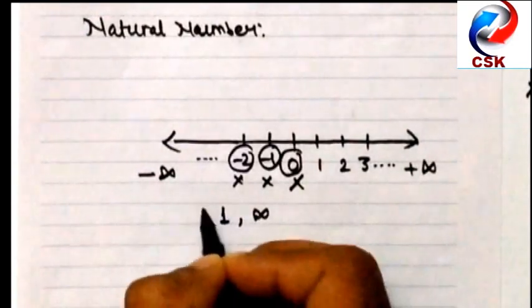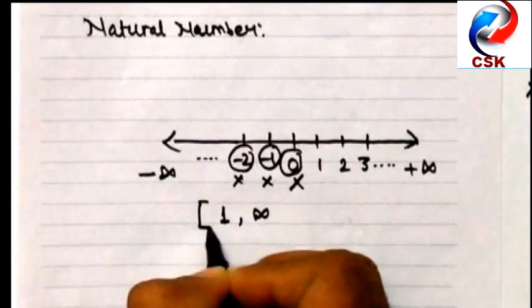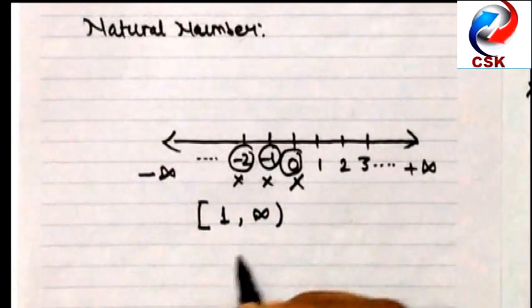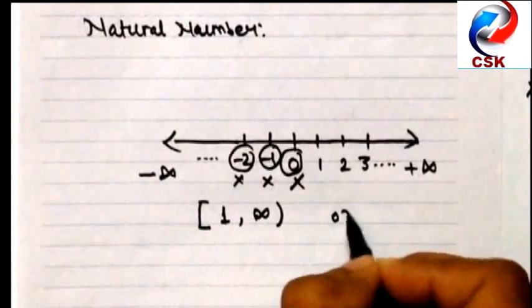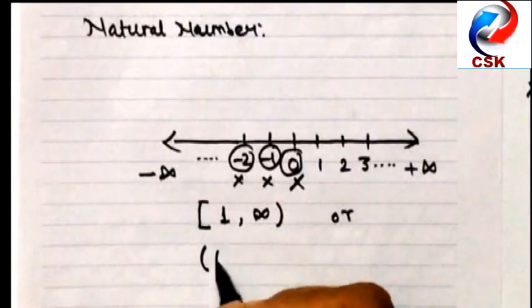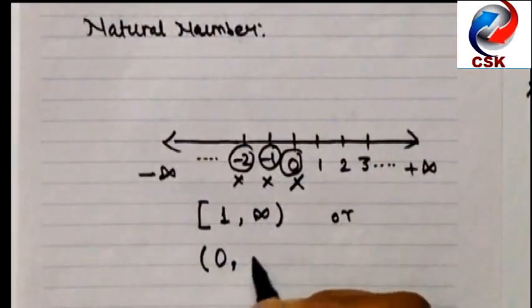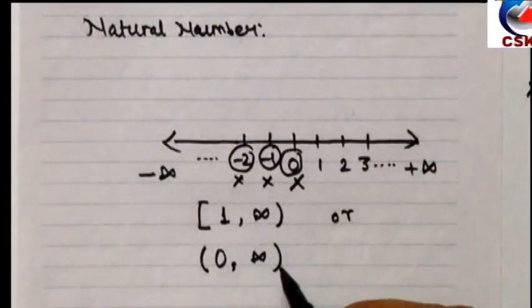So I can write the range of a natural number is plus 1 to infinite, where 1 is included. However, infinite is not included. Or I can write in the smaller bracket as 0 to infinite, that means both are not included.